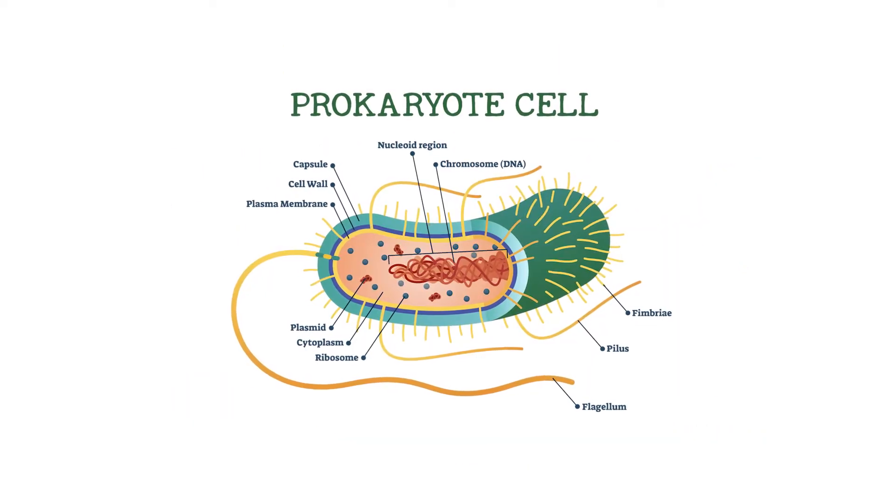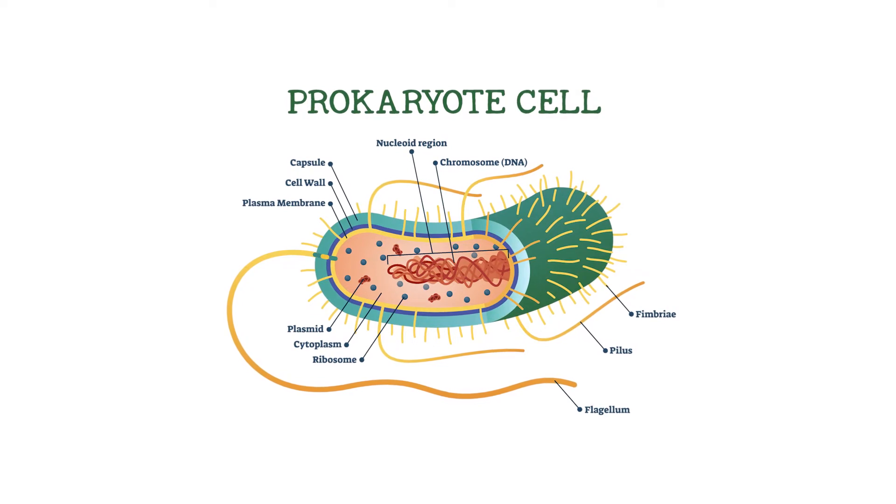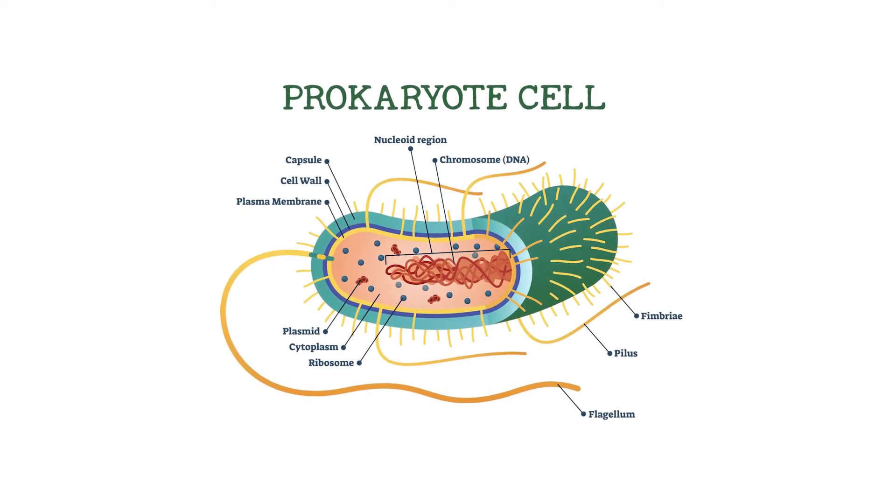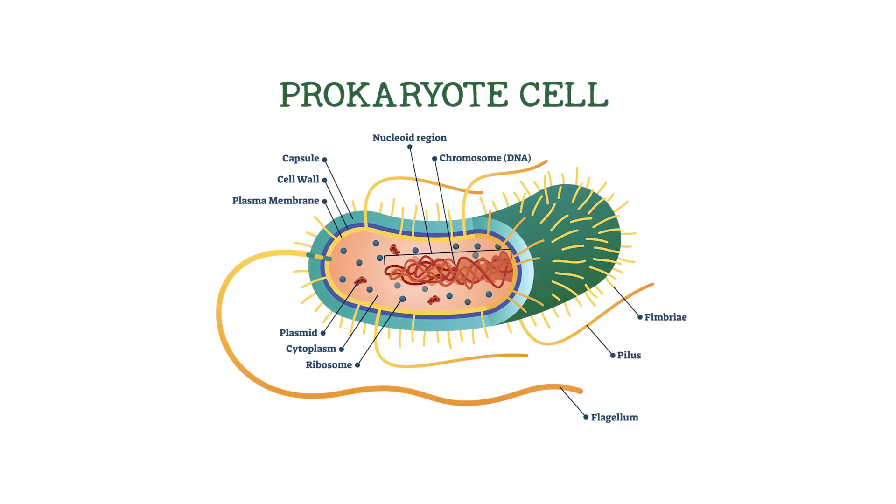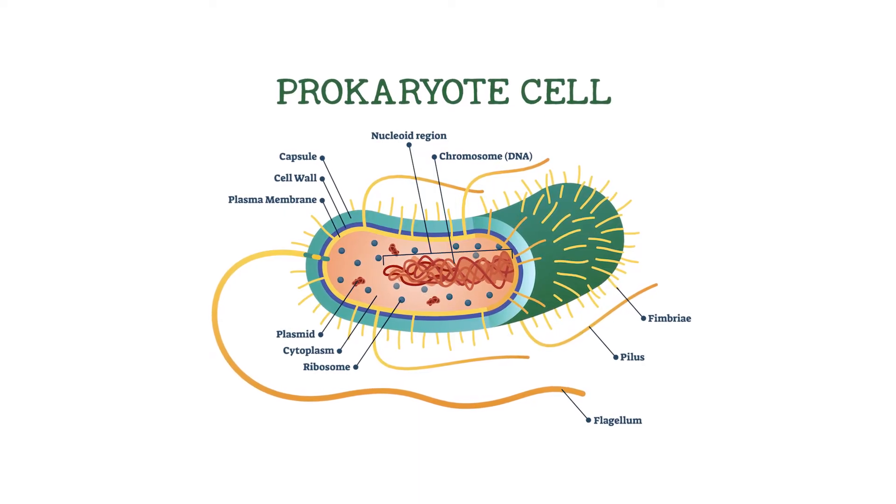The genetic material of a prokaryote floats freely within the cell's cytoplasm, along with organelles less complex than those found within a eukaryote.